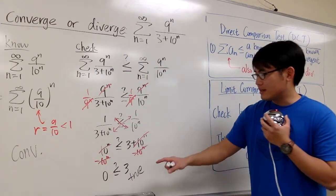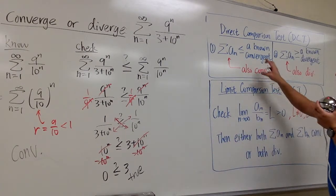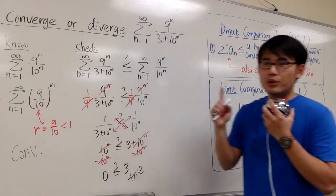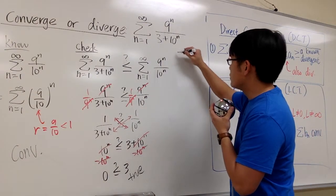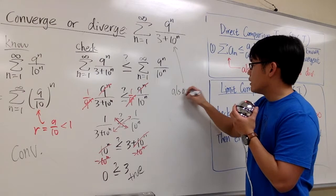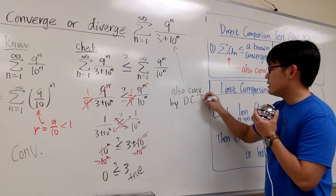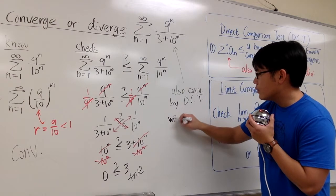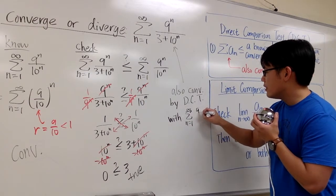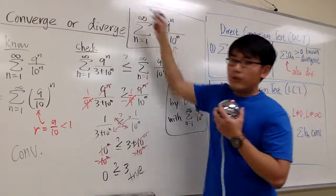Because the inequality is true, we get to draw conclusions. We get to say that this series also converges, and the reason is because we are using the direct comparison test — DCT — with the series sigma from n equals 1 to infinity of 9 to the n over 10 to the n. And this will be my conclusion.